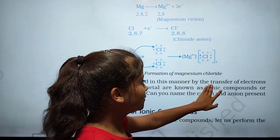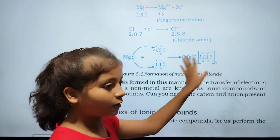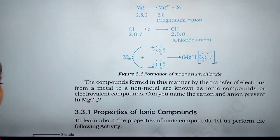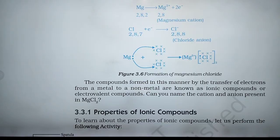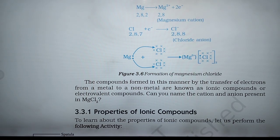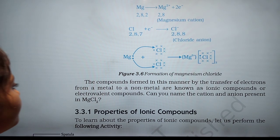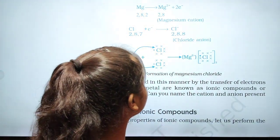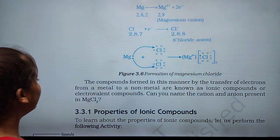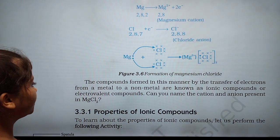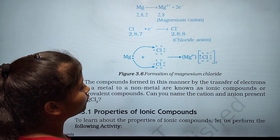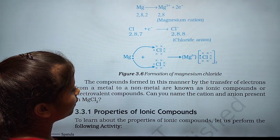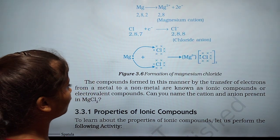The compound formed by the transfer of electrons is called an ionic compound. The compounds formed by the transfer of electrons from a metal to a non-metal are known as ionic compounds or electrovalent compounds.